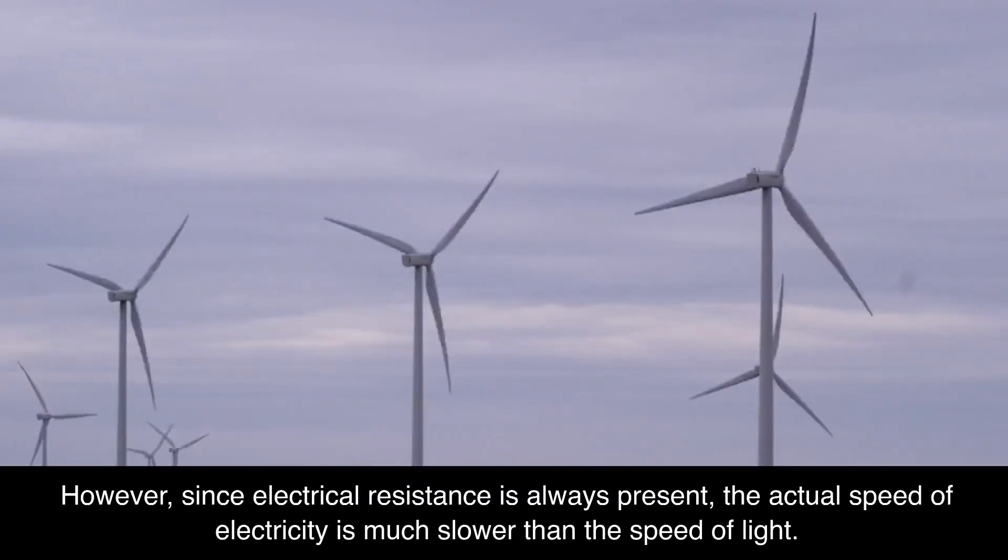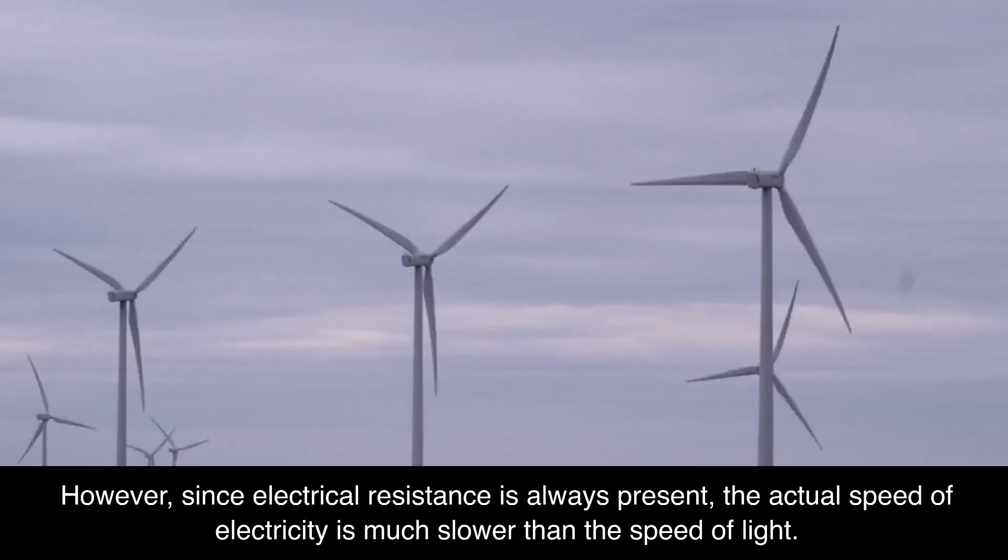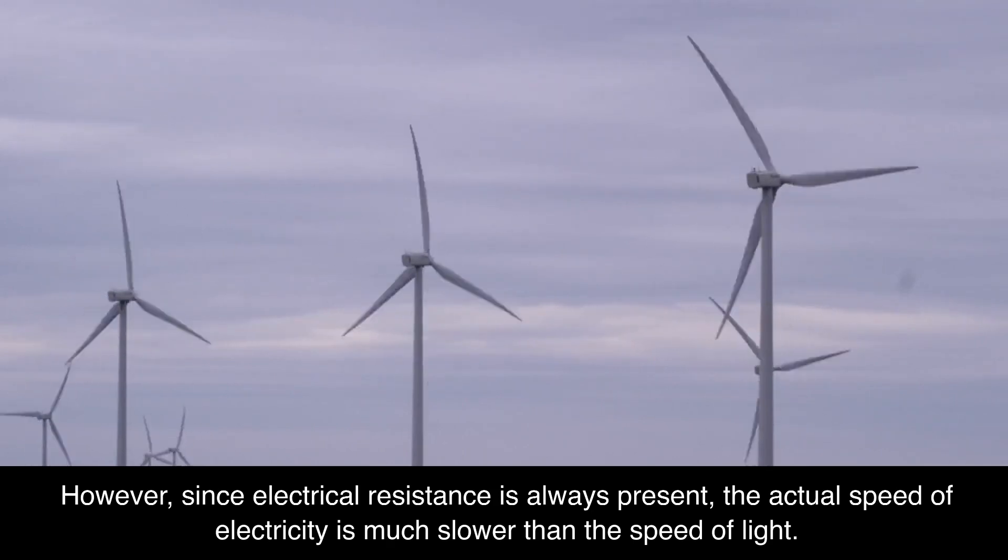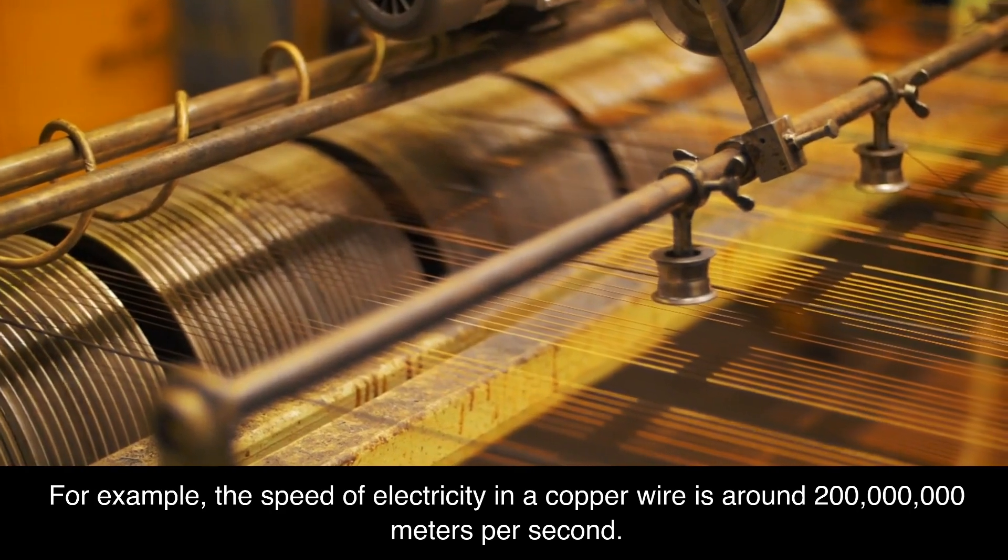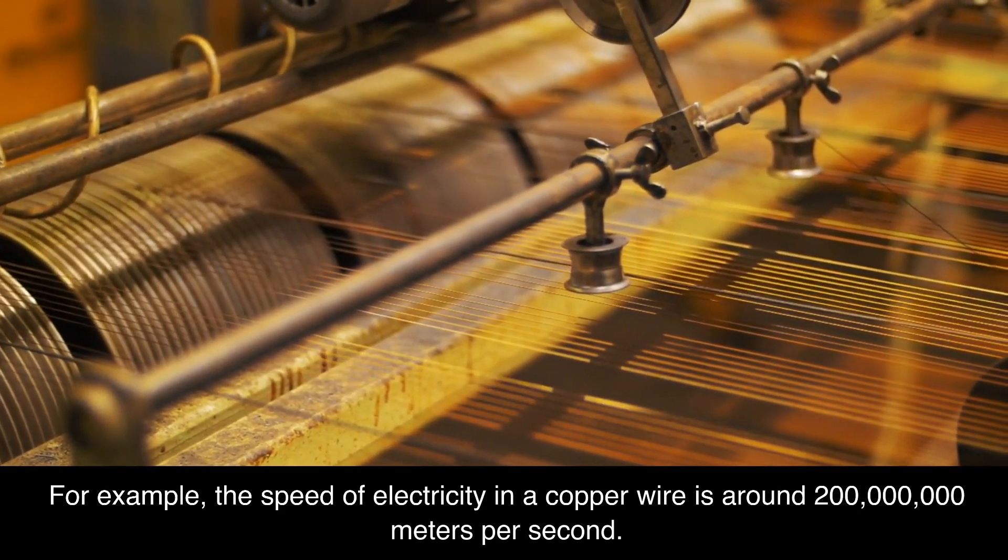However, since electrical resistance is always present, the actual speed of electricity is much slower than the speed of light. For example, the speed of electricity in a copper wire is around 200 million meters per second.